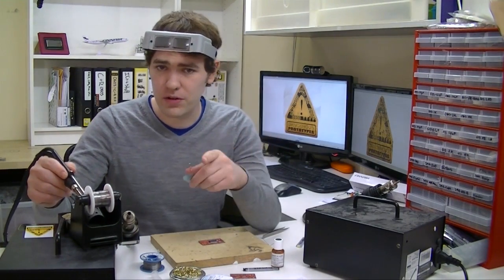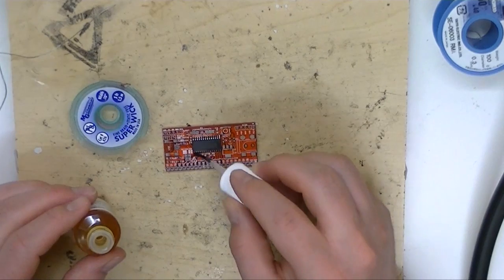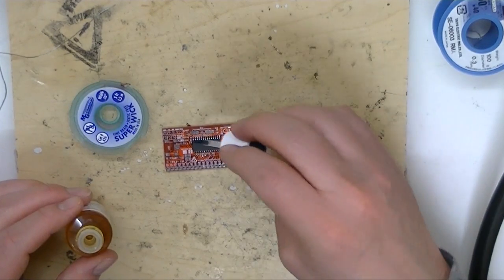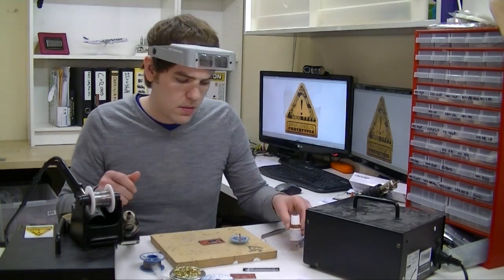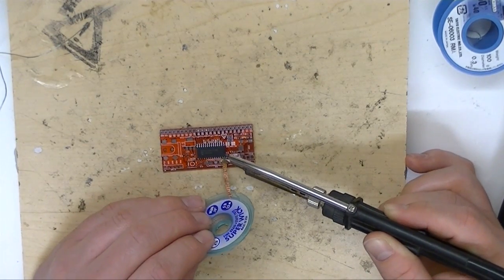I'm actually going to add a little bit more flux. This flux isn't as thick as the stuff in the syringe, and I want to add a little to the pins to make sure it wicks up really well. This step isn't strictly necessary, but since we're probably going to take pictures of this and put it on the blog, we want it to be nice and tidy.